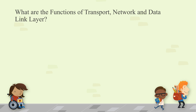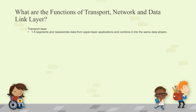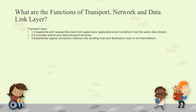What are the functions of the Transport layer? The Transport layer segments and reassembles data from upper layer applications and combines them into the same data stream. It provides end-to-end data transport services and establishes a logical connection between the sending host and destination host on an internetwork. It ensures data integrity by maintaining flow control. TCP, UDP, and port numbers all come into the picture at the Transport layer.